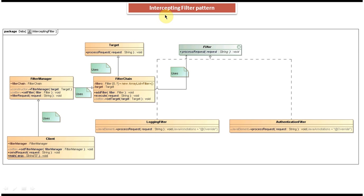Now we will see the class diagram of the sample code I am going to show. Here you can see the filter interface. It has a process request method, and this interface is implemented by two concrete classes. The first one is logging filter, and the other one is authentication filter.